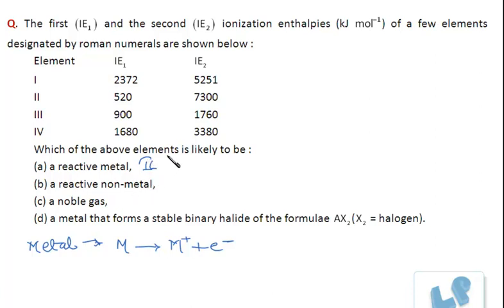Then see that the jump between the first ionization enthalpy and the second ionization enthalpy. There is a huge difference between it. It means that the second electron is removed from the stable configuration NS2 and P6, as is the case with alkali metals.